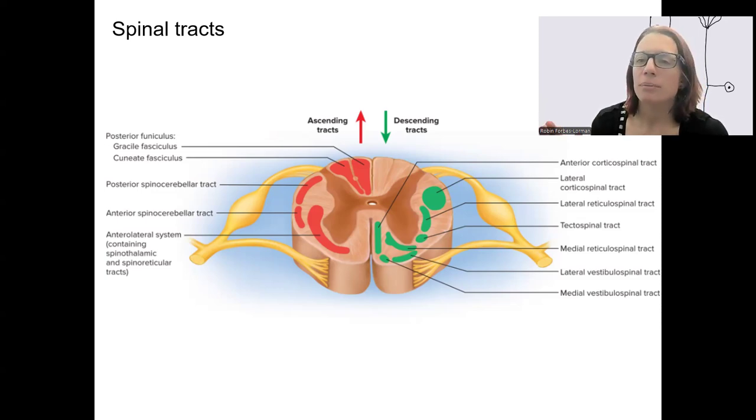Tracts or columns within the white matter is one of the big places we're going to be seeing this information travel through to get to the brain.